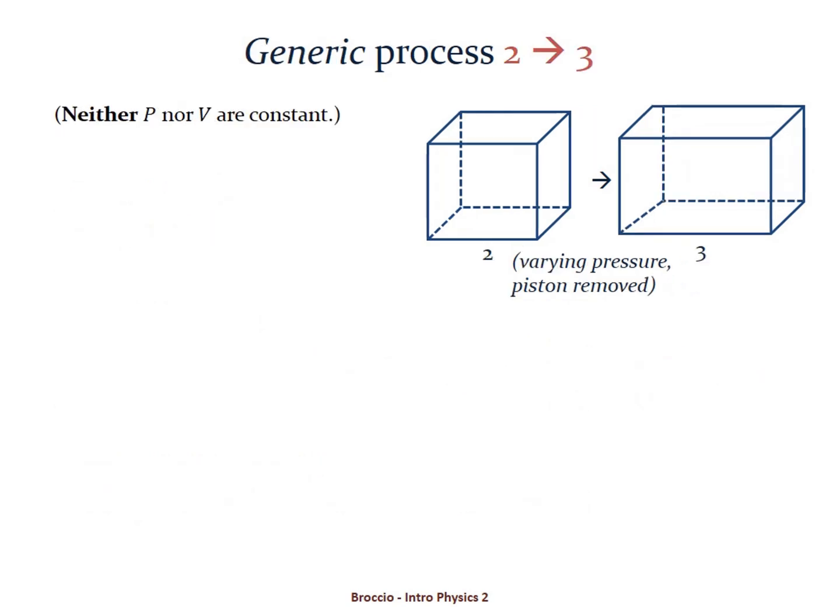Next, from 2 to 3, it's a generic process. It's neither isobaric nor isochoric. P and V are both changing.